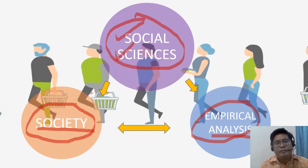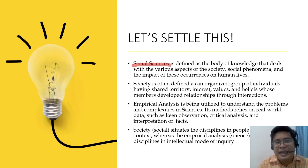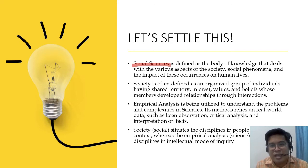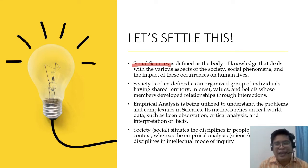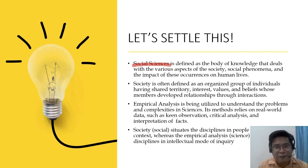So let's settle this once and for all. When we say social sciences, it is defined as the body of knowledge that deals with the various aspects of the society, social phenomena, and the impact of these occurrences on human lives. Everything that deals with the various aspects of society, its phenomena, and its impact on human lives is studied in social sciences — in a scientific manner, of course.